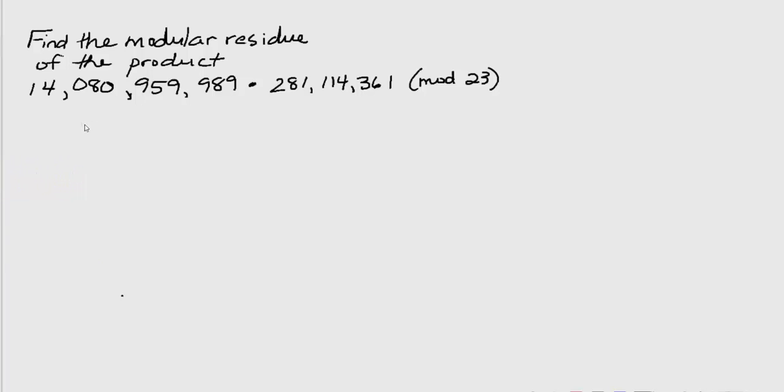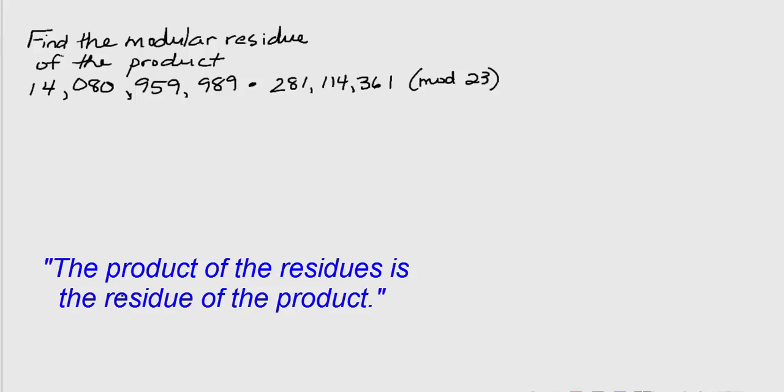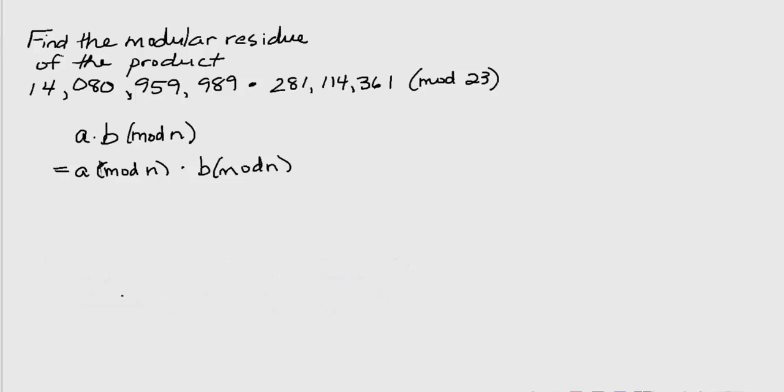We're going to take advantage of a fact of modular arithmetic, which says that if you have two numbers, a and b, and we're taking their product mod n, that's the same as taking a mod n and multiplying it times b mod n. So instead of performing the multiplication first, we're going to find the residue for a and the residue for b.